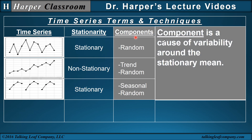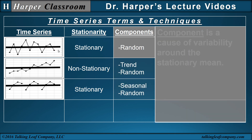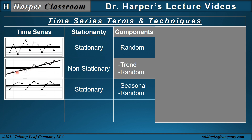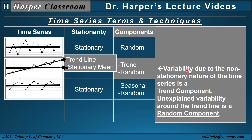Next is components. A component is a cause of variability around the stationary mean. Looking at the variability around the means — starting with random: there is variability around this mean, but there doesn't seem to be any pattern and it's unexplained. Unexplained variability around the stationary mean is called a random component. The second time series is non-stationary; the non-stationary character introduces variability, which is a trend component. The variability around that trend line is unexplained, so it's also a random component.